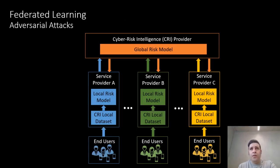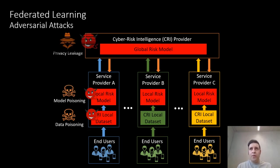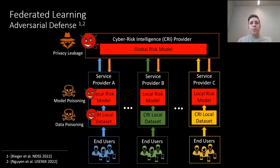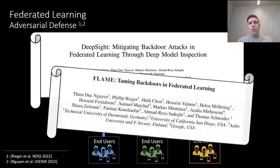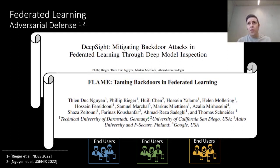Despite its benefits, federated learning has been shown to be vulnerable to adversarial threats like data poisoning, model poisoning (also known as backdoor), and privacy attacks such as inference attacks, data reconstruction attacks, and so on. Several approaches have been proposed that combine secure aggregation with defense against backdoor injection. I refer you to some of those works, including two recent works from our group — one presented at NDSS this year and the other at USENIX Security 2022. We note that these defenses can be easily integrated into our platform to mitigate these attack vectors.